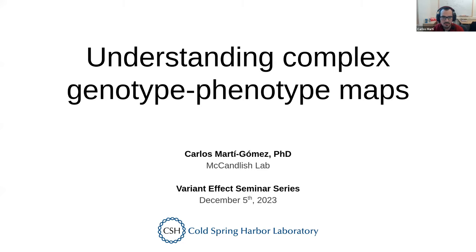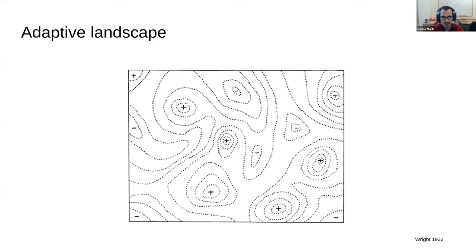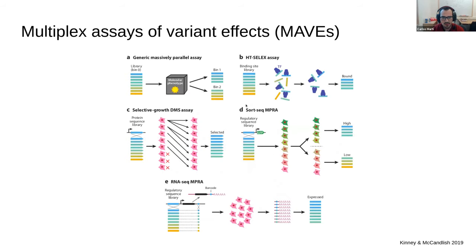We do so by drawing inspiration from the evolutionary literature and the concept of the adaptive landscape, which was first introduced by Sewall Wright. This is a topographic mapping where points represent genotypes and each genotype has an associated height, giving us a language of peaks and valleys. However, we still don't have a very good understanding of what these shapes look like with real data — only recently, thanks to massively parallel assays, can we start to tackle this question.